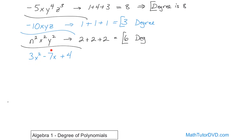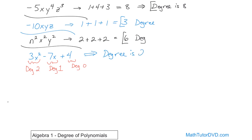You find the degree of each term and then figure out which one is largest — that would be the degree of the entire polynomial. The first term has x squared, so its degree is 2. The second term, x is raised to the power of 1, so its degree is 1. The last term is just a constant, so its degree is 0. You look at each of these and see which is biggest: 2 is the largest, so the degree of the entire polynomial is 2.